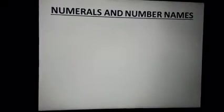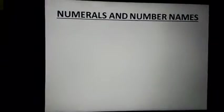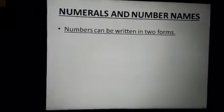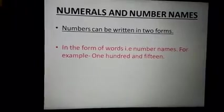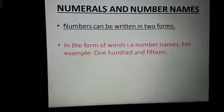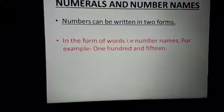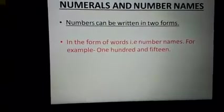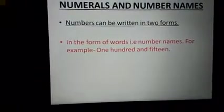Now how the numbers can be written? These numbers can be written in two forms. The first one is in the form of words, i.e. number names. Earlier also we have studied number names from 1 to 100.